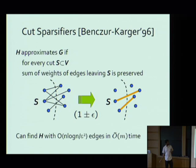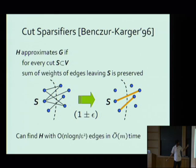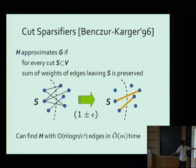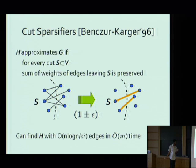The first sparsifiers were given by Benzer and Karger in 1996 for the purpose of finding cuts. For them, graph H approximates G if for every cut S — that is, for every subset of the vertices S — the total weight of edges leaving S is approximately equal in G and in H, up to a 1 plus or minus epsilon factor. You want to delete most of the edges, blow up the weights on the remaining edges so the total weight is approximately the same, and you want this to hold for all cuts — for all exponentially many cuts in the graph.